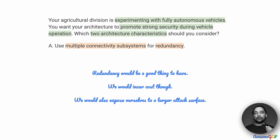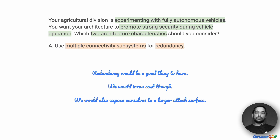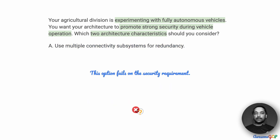However, the more systems we have for redundancy, the larger the attack surface we expose ourselves to. For example, if there's a SIM card connection using 4G and another using Wi-Fi, there are now two places where an attack can occur and we need to guard against both. So the requirement of promoting strong security is not well served here, and we're going to eliminate option A.